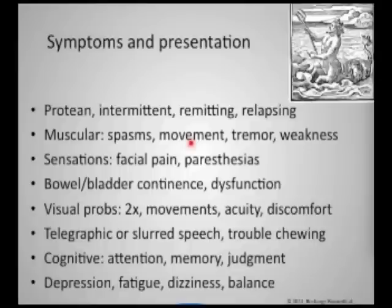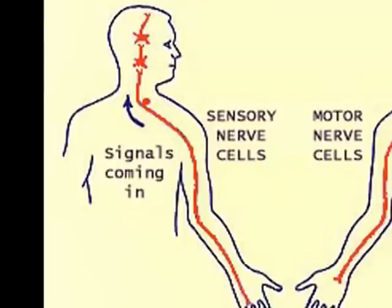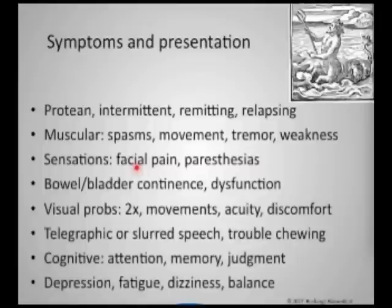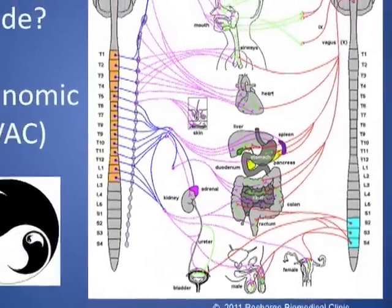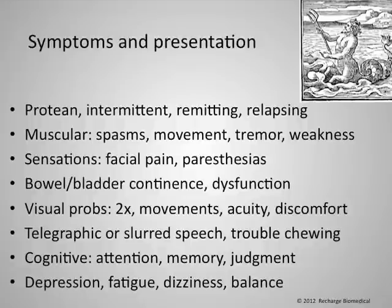The muscles can have spasms, involuntary movement, tremor, and weakness or difficulty doing intentional movement. Sensations are affected in all manner of presentation. What we call the afferent — meaning signals going to the central nervous system or control center — is messed up too. So you can get facial pain, paresthesias. Also under neural control centrally is bowel and bladder function — the ability to hold urine and feces and, at appropriate times, expel them — controlled mainly by sympathetic and parasympathetic systems, sort of like the HVAC system of the body.